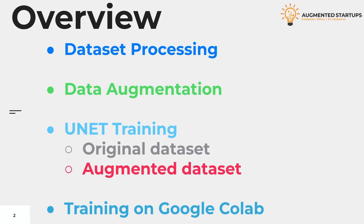After this, we will go to the data augmentation step, where we apply various transformations to the training dataset and increase the number of training samples. We will then have two datasets: the original dataset and the augmented dataset. In the next step, we will begin training the U-Net architecture on both datasets. This way, we will have two different models, and we will compare their training process to see which one is performing better.